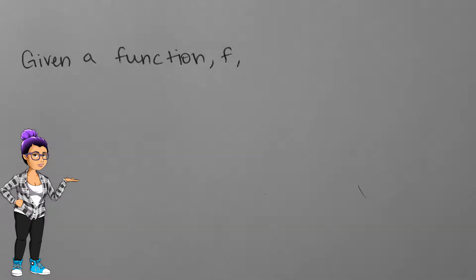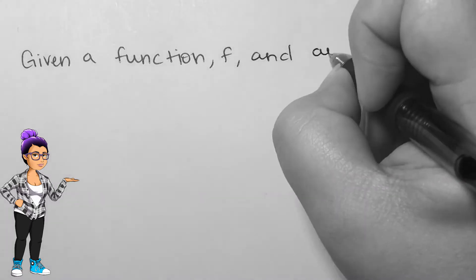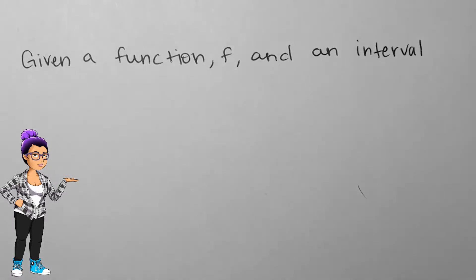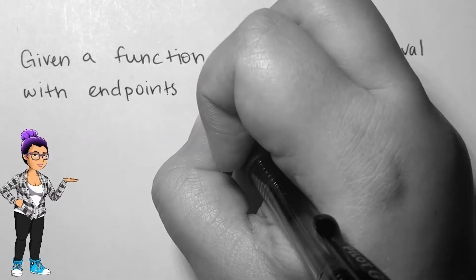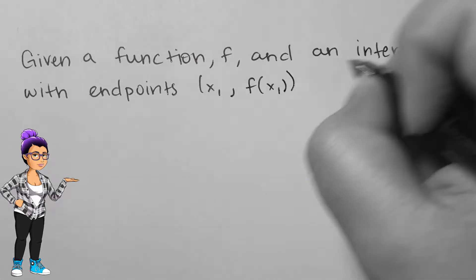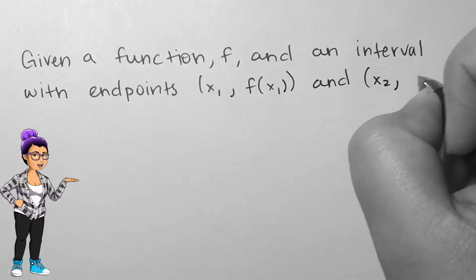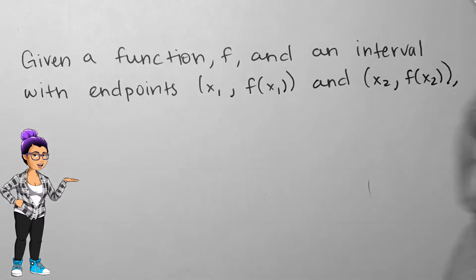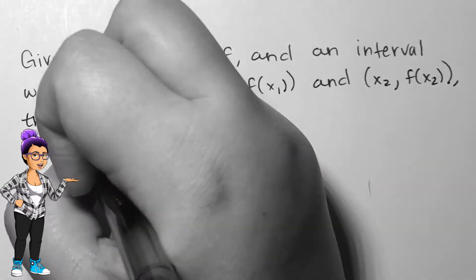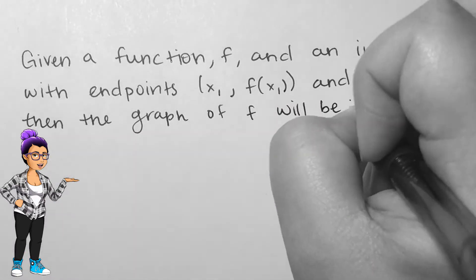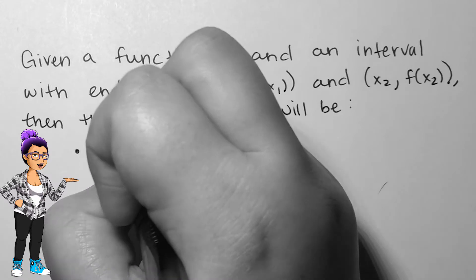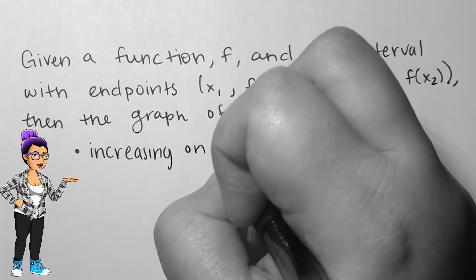Given a function f and an interval with points x1, f of x1 and x2, f of x2, then the graph will be increasing on the interval x1 to x2 if f of x2 is bigger than f of x1.